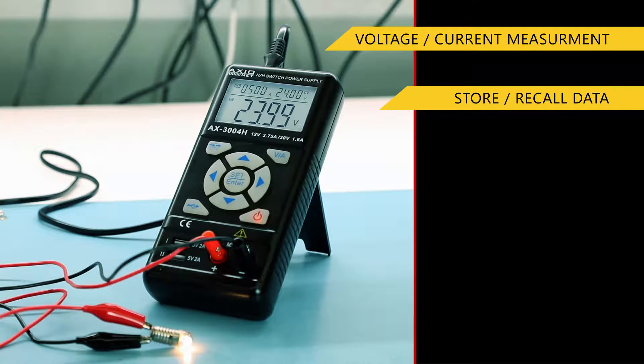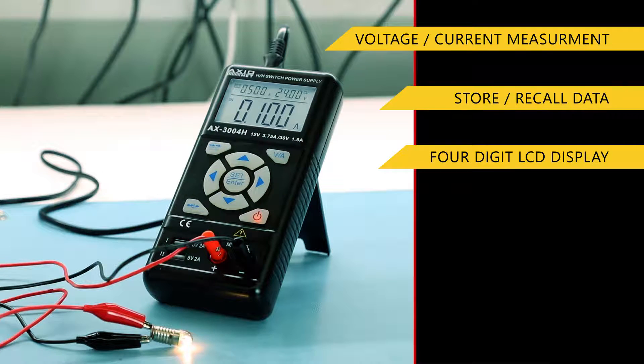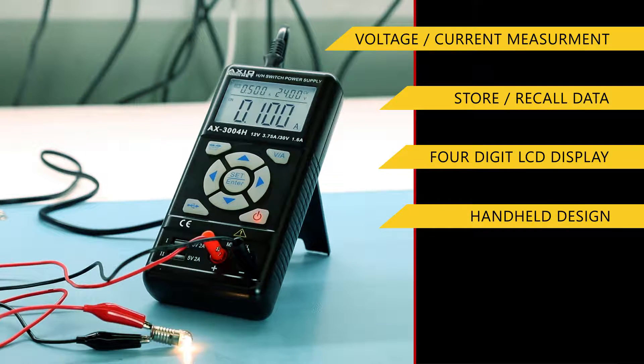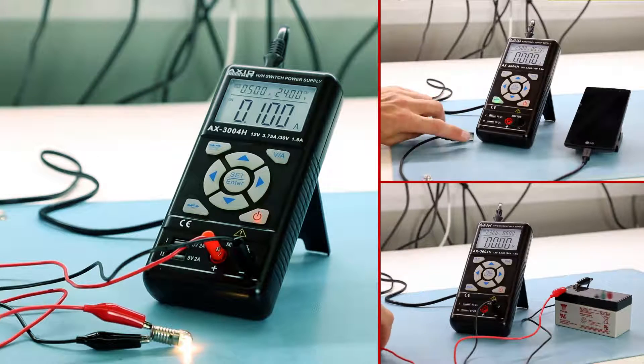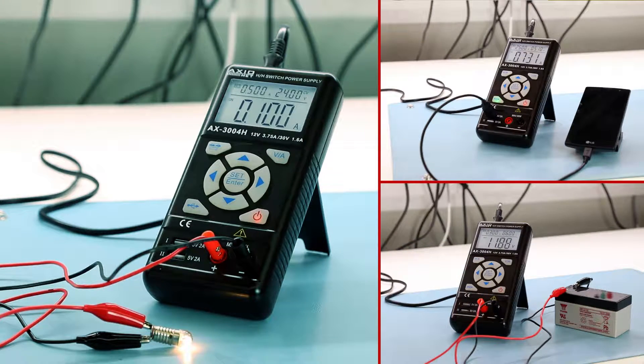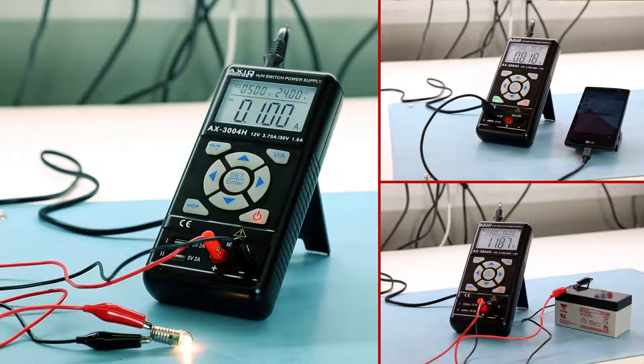The AX3004H also has a four digit voltage and current meter and compact handy dimensions. It is an ideal device for various applications requiring different loads.